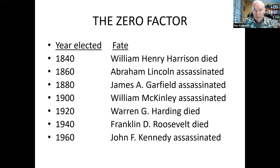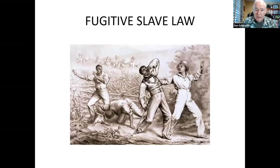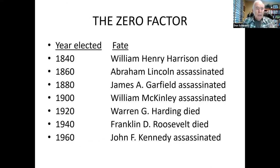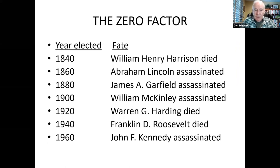This zero factor ended with Reagan's election in 1980, although as you know, he was shot less than one year into his presidency. The next presidential election we're going to look at is the presidential election of 1860.